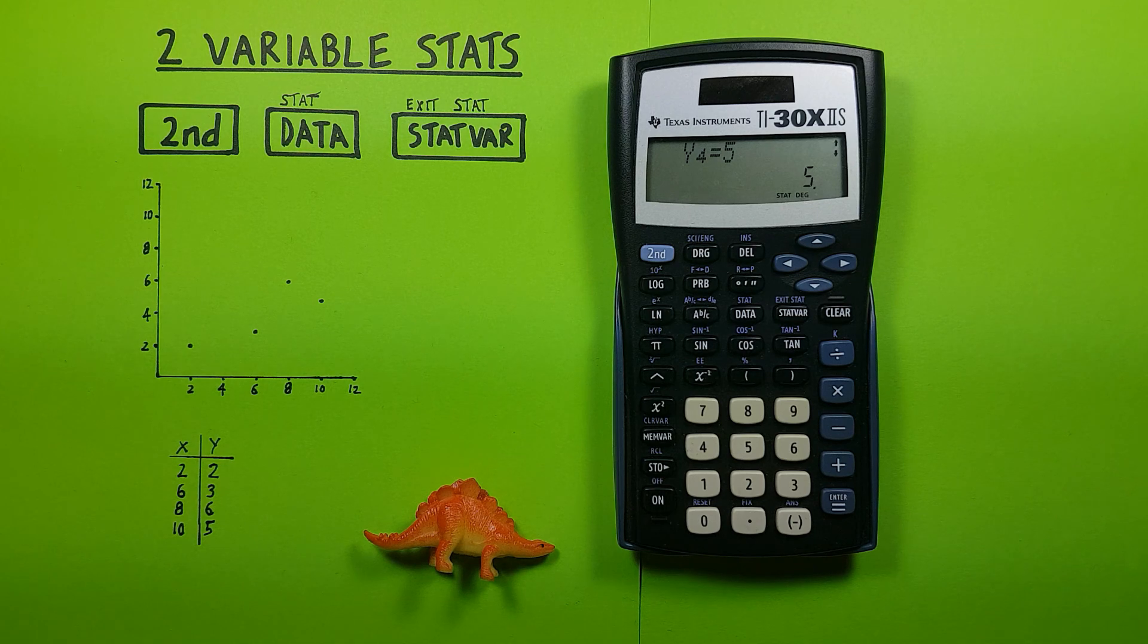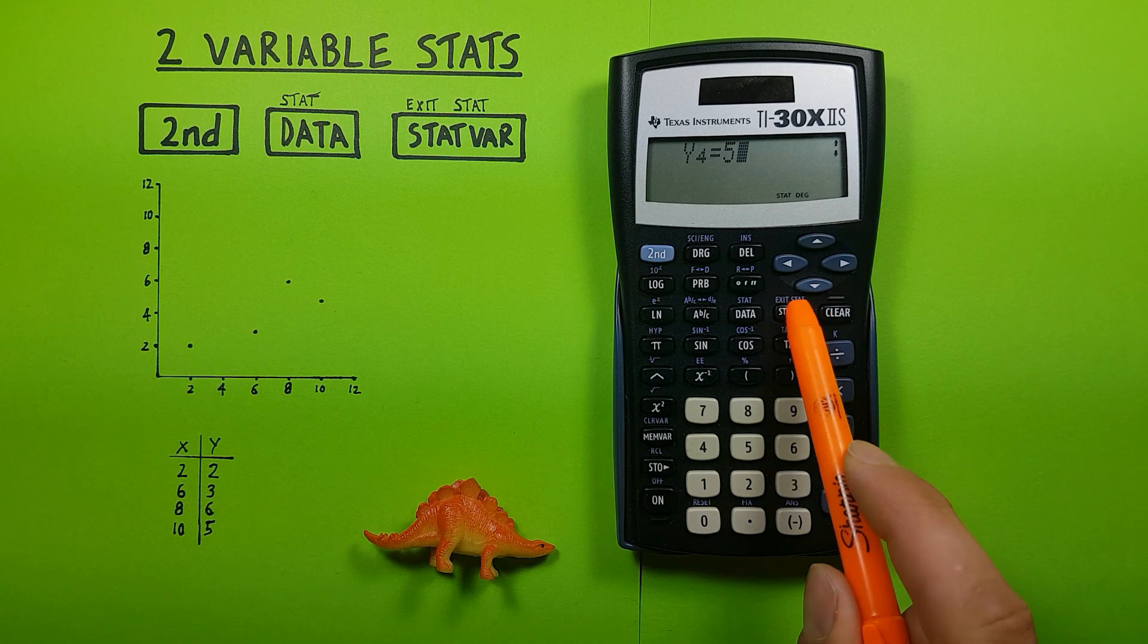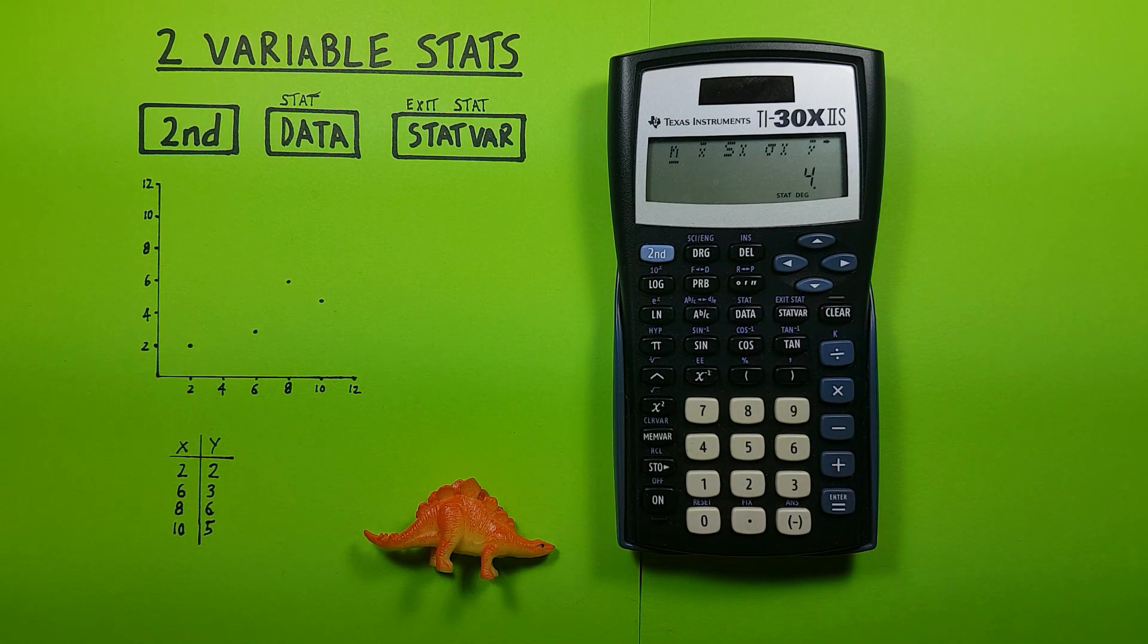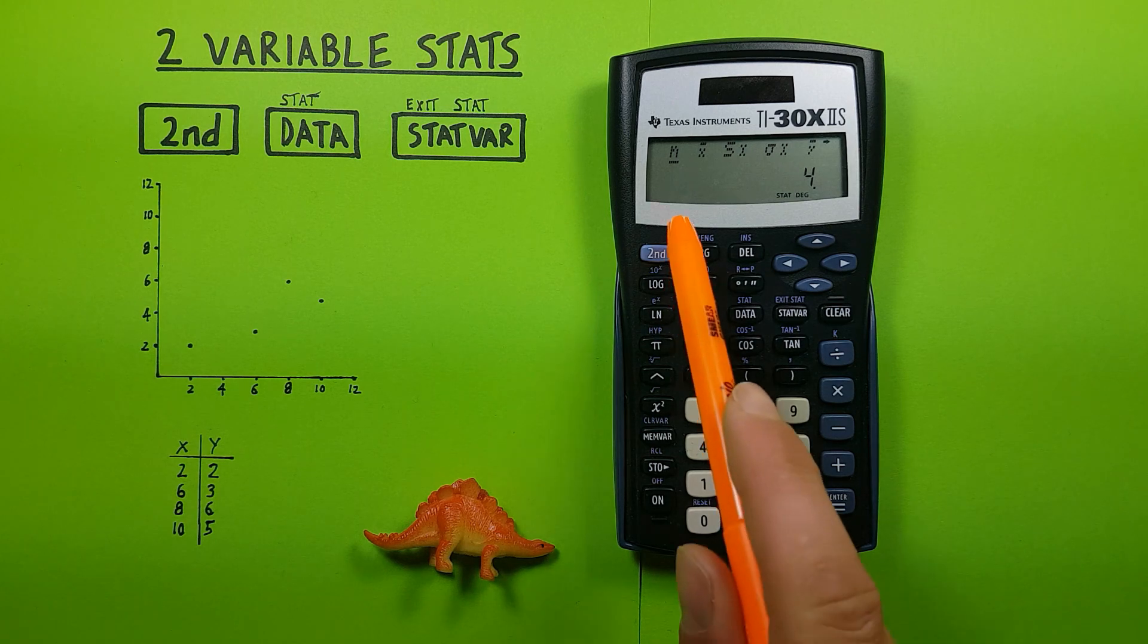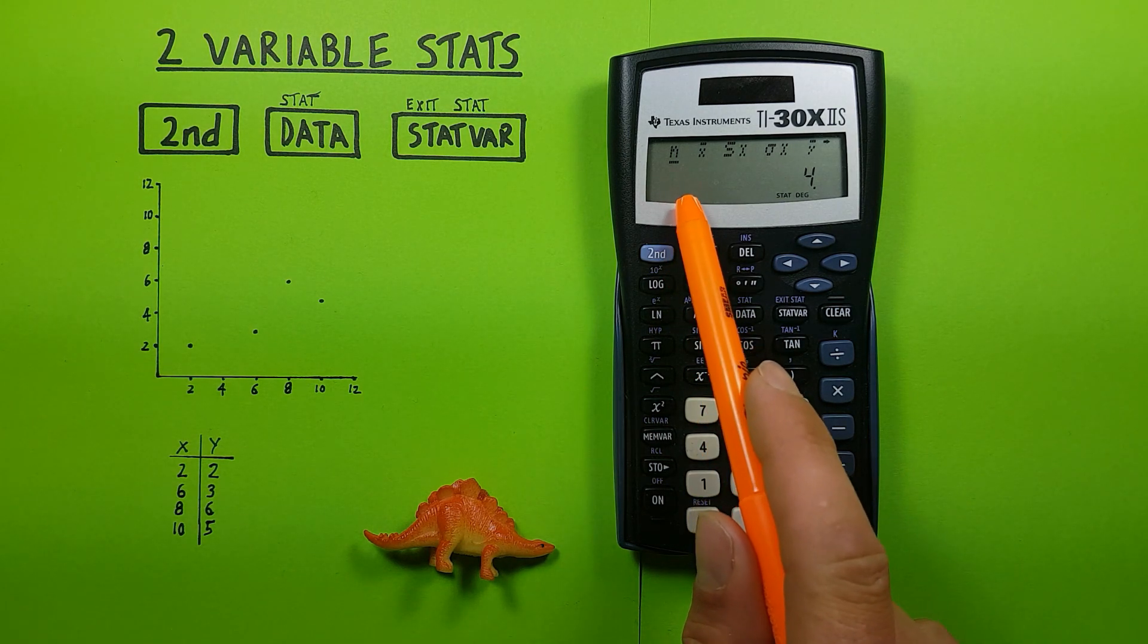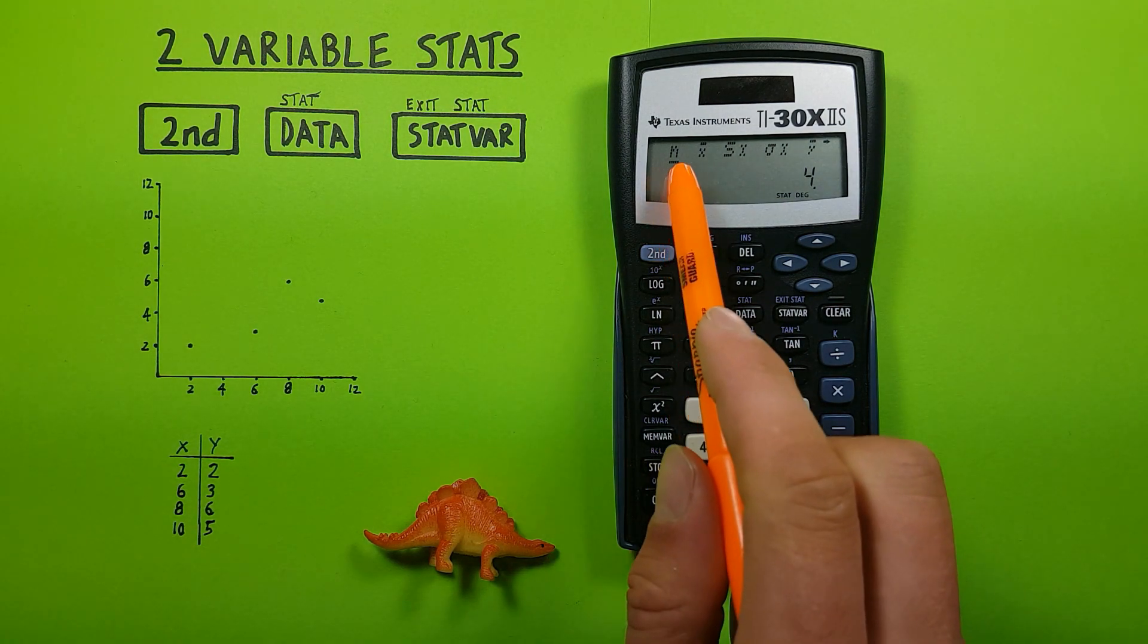All right, all our data has now been entered. Now if we want to see our statistics we press stat var. You see it says calc there for a second and then it brings up this screen. First we have n which is the number of points, you can see here n equals 4.